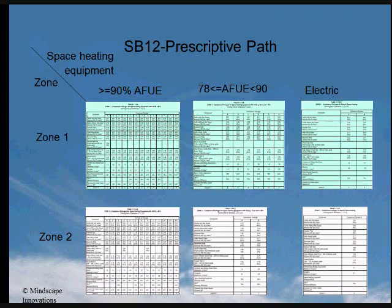Zone 1 includes all municipalities where there is less than 5,000 heating degree days in one year. The number of heating degree days can be found in the Ontario Building Code Supplementary Building Standard SB1. Zone 2 includes all municipalities with 5,000 heating degree days or more.